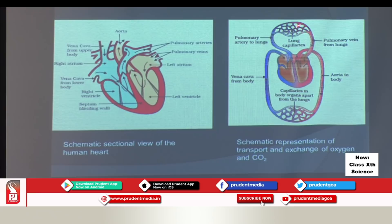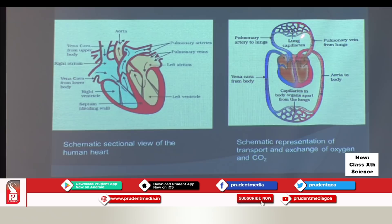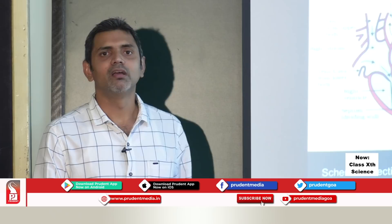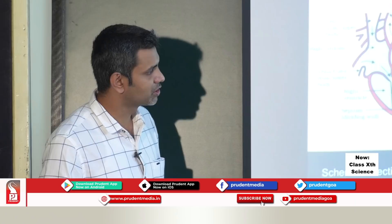From the right atrium, deoxygenated blood enters the right ventricle. From the right ventricle, blood is carried to the lungs by pulmonary arteries — which carry deoxygenated blood. In the lungs, carbon dioxide is given out and oxygen is taken in from the air. The lungs always maintain a residual volume of air to allow continuous gas exchange.